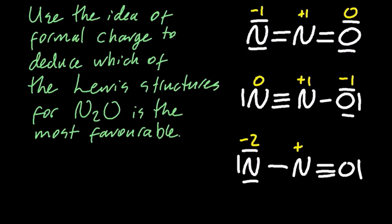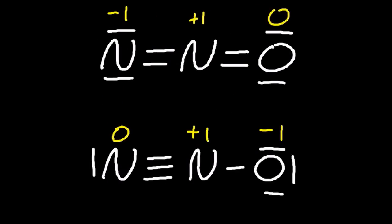Alrighty, so which is the preferred structure? Not that one, because that has numbers the furthest away from zero compared to the others. Looking at these two, well, there's a couple of minus 1s, a couple of plus 1s and a couple of zeros. So let's see if the most electronegative is negative formal charge. Most electronegative being oxygen.